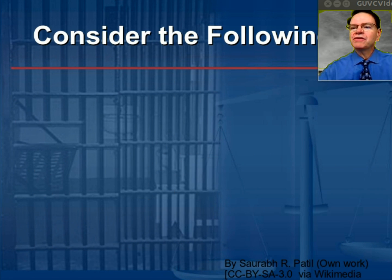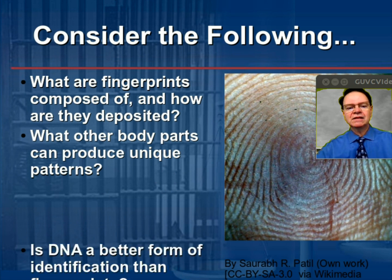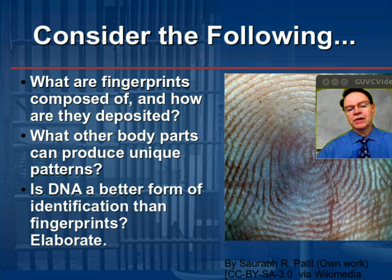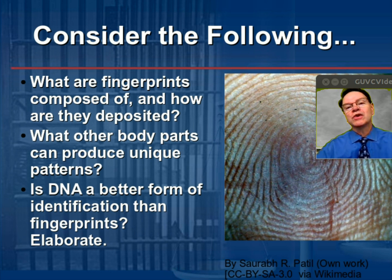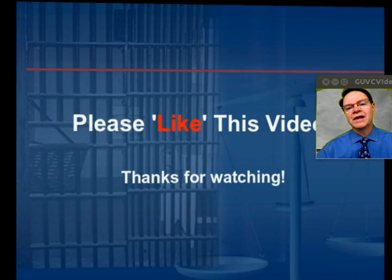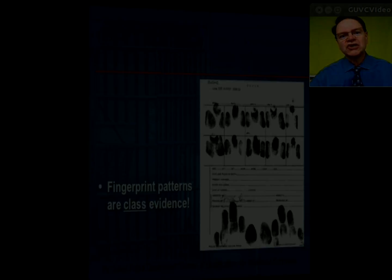Consider the following questions: What are fingerprints composed of, and how are they deposited? Are there other body parts that can produce unique patterns as well — you can probably think of three others? And finally, is DNA really a better form of identification than fingerprints? Consider that question and elaborate on your response. That's all the time we have for now — thanks for watching. Bye bye.